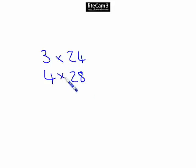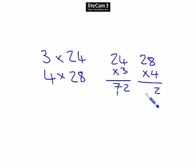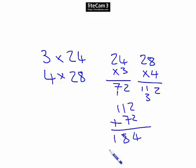OK, this is a straightforward multiplication. So 24 times by 3: 3 times 4 is 12, 3 times 2 is 6, that's 72. And 28 times by 4: 4 times 8 is 32, 4 times 2 is 8, that's 112. So 72 plus 112 will give us 184. So our answer is 184 pupils.